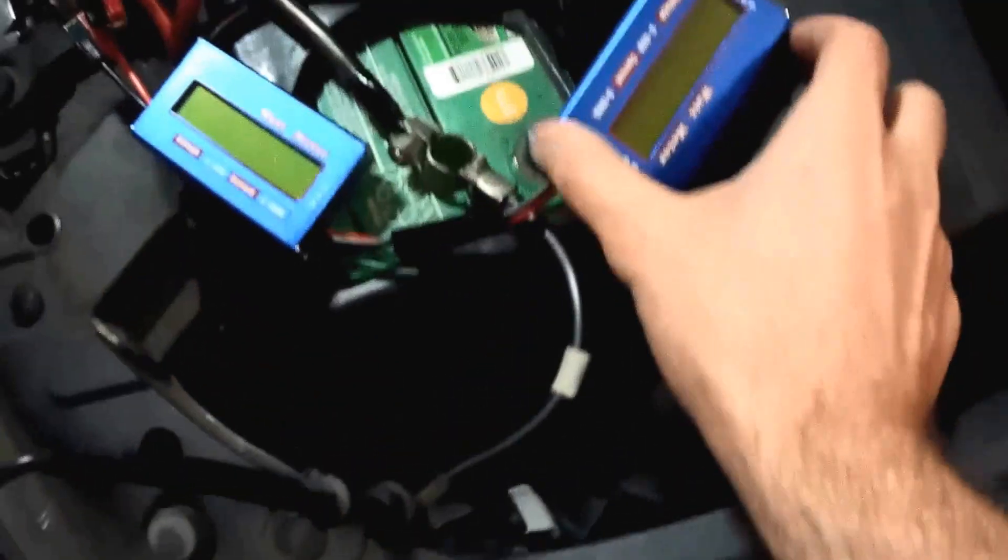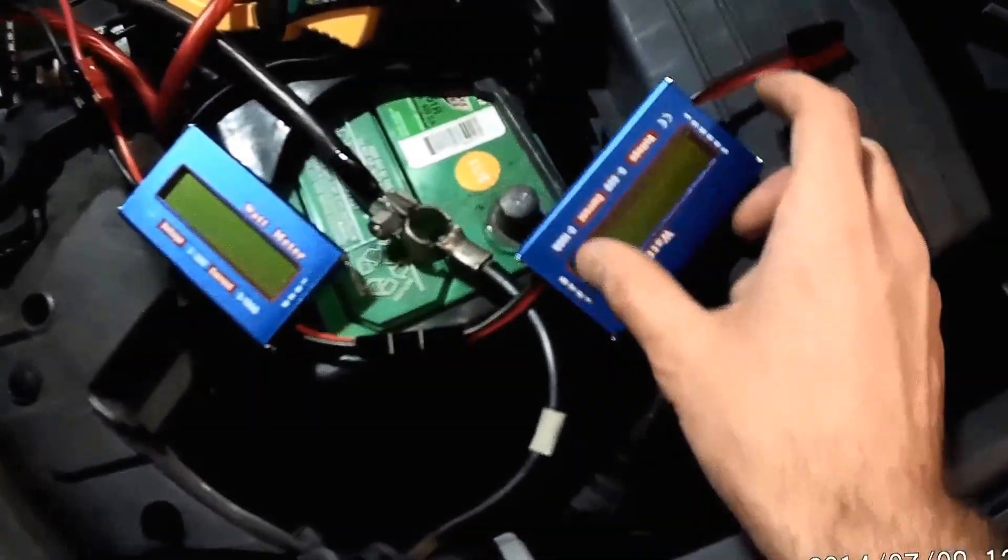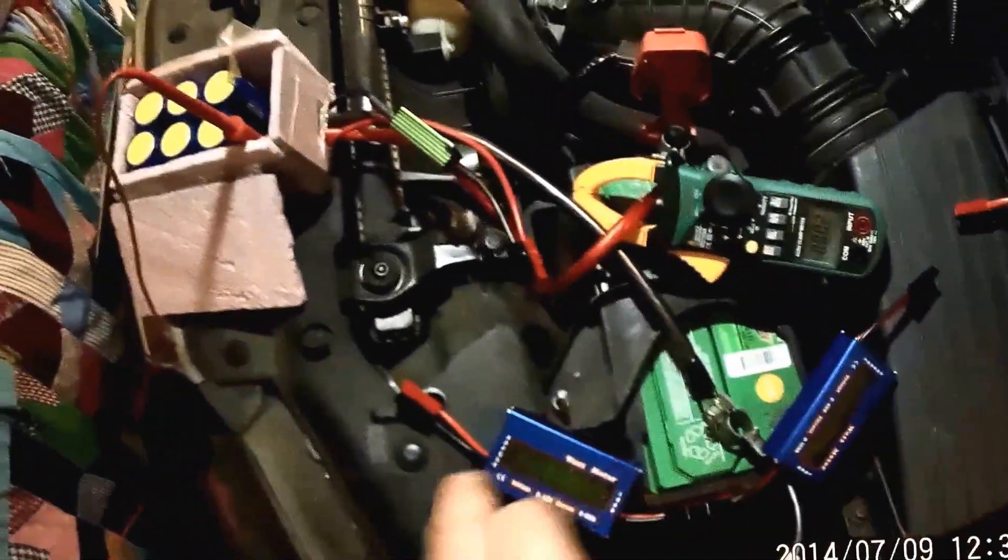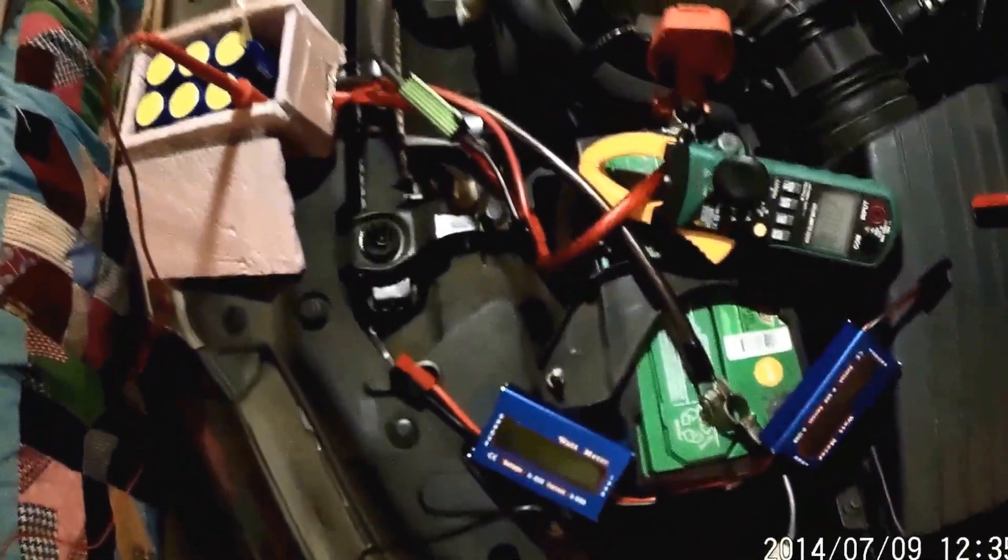This meter here I've got set up kind of opposite of the other one, and that's going to measure the discharge amps from the battery to the supercapacitor. I want to make sure that the amps going to the battery and from the battery are within safe limits. I want this battery to last a long time.